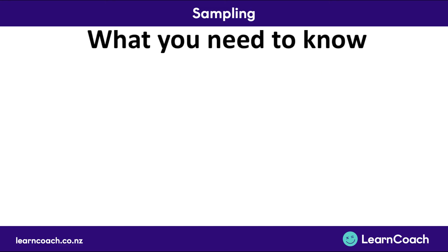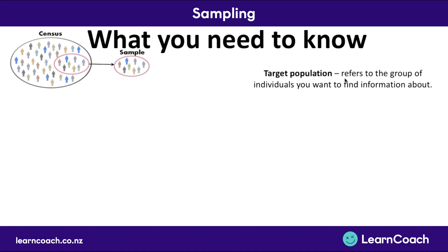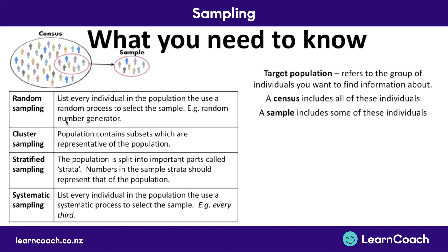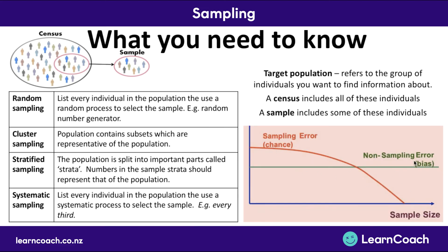To summarize what you need to know from this video: a target population is the group of individuals you want to find information about; a census includes all of these individuals and a sample includes some; you want the sample to be representative of the whole population. You need to identify different sampling methods: random sampling, cluster sampling, stratified sampling, and systematic sampling. Finally, sampling errors are due to chance and decrease with increased sample size, while non-sampling errors are due to bias arising from the way information is collected — and sample size has no effect on non-sampling errors. That concludes the video on sampling.